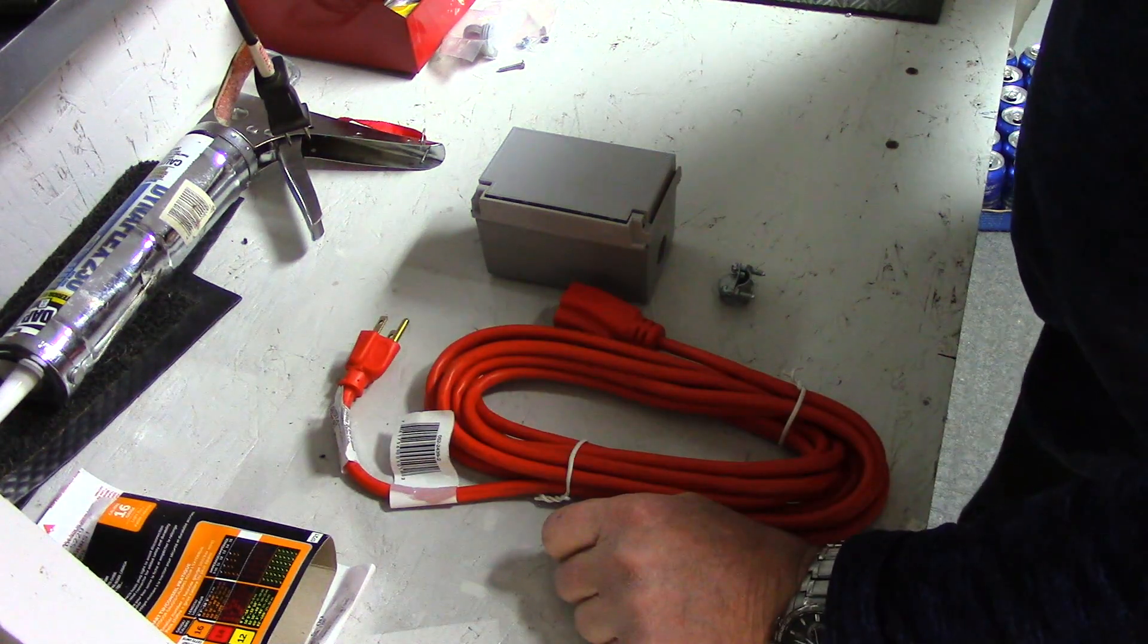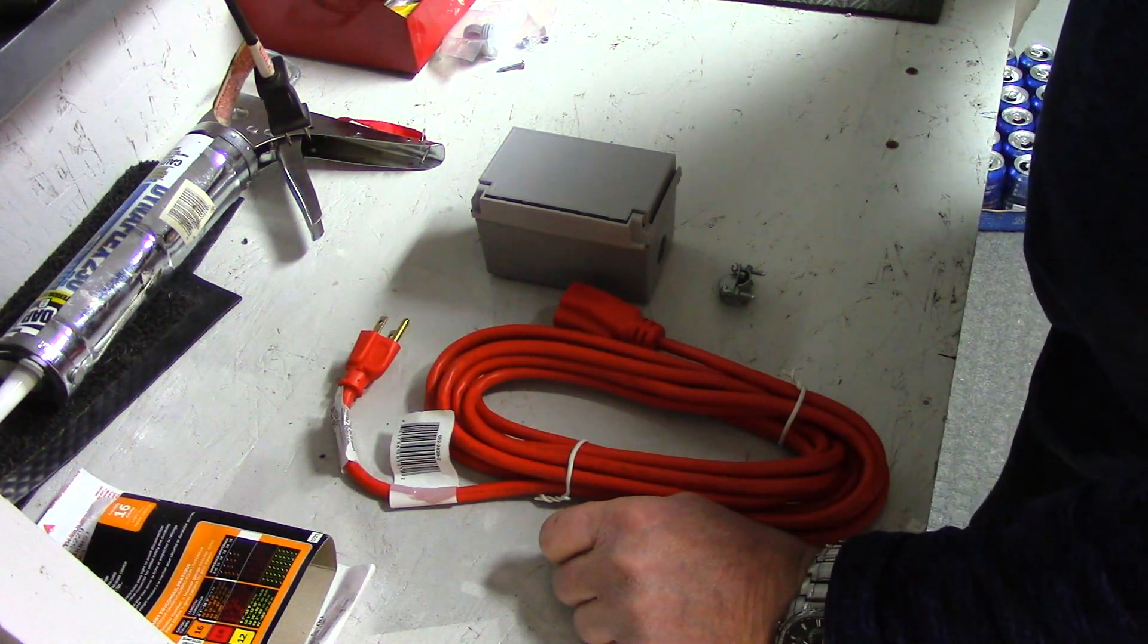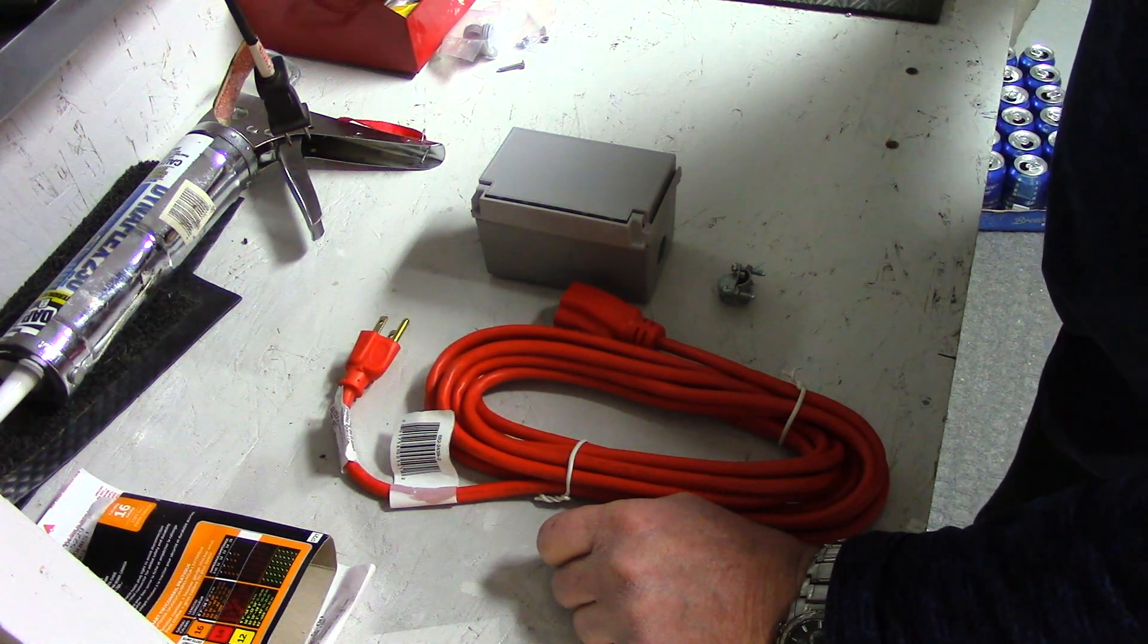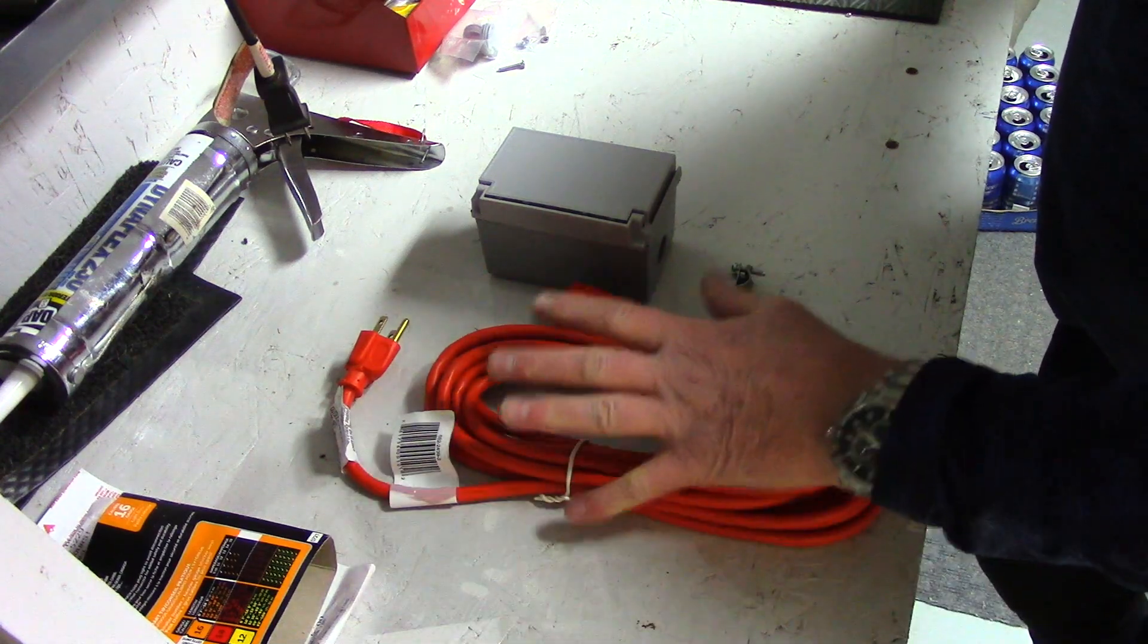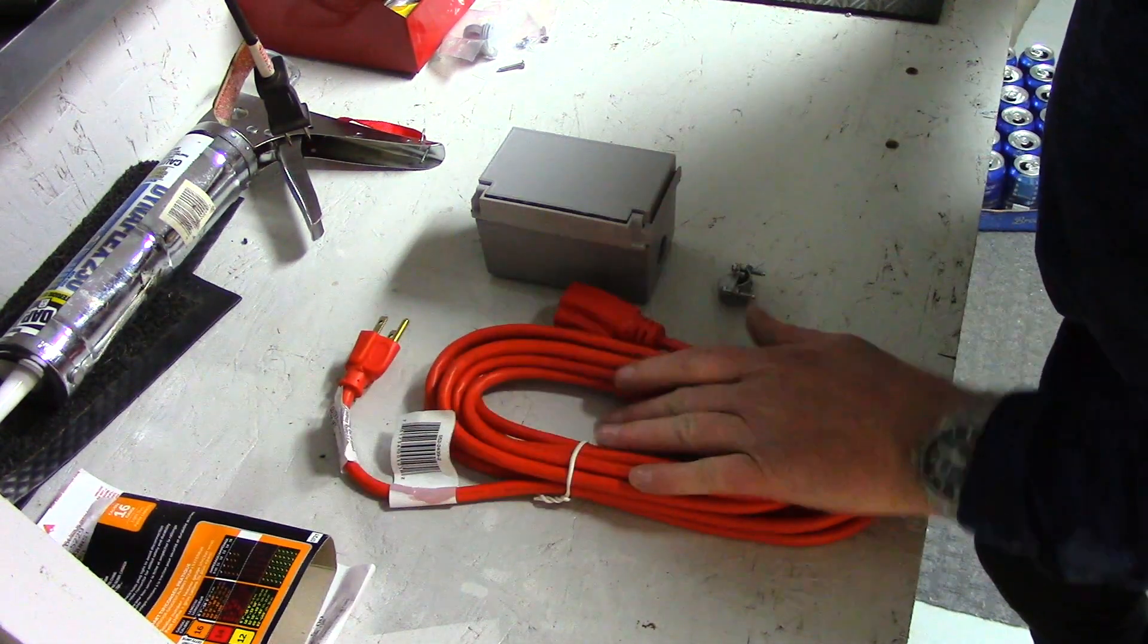...it said it recommends to plug into a ground fault circuit interrupter, a GFCI. Basically what that is, anytime there's any water or it wants to short out, it will immediately cut the power off.